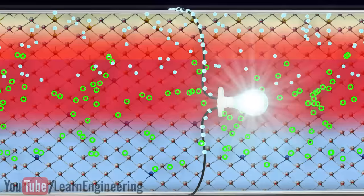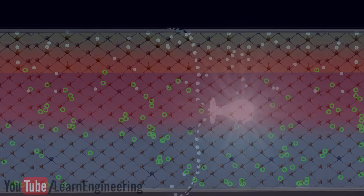The other advantage is that due to the thin top layer, more light energy can reach the depletion region. Now, let's analyze the structure of a solar panel.